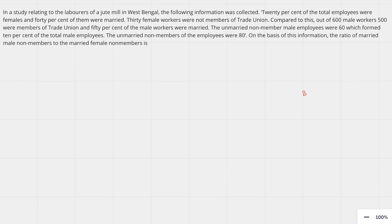We will start with the second question of set C. In a study relating to the labourers of a jute mill in West Bengal, the following information was collected: 20% of the total employees were females and 40% of them were married. 30 female workers were not members of trade union. Out of 600 male workers, 500 were members of trade union and 50% of the male workers were married. The unmarried non-member male employees were 60, which formed 10% of the total male employees. The unmarried non-members of the employees were 80. We have to find the ratio of married male non-member to the married female non-member.